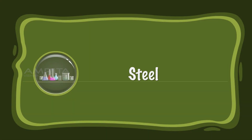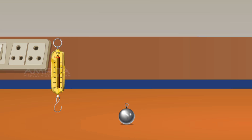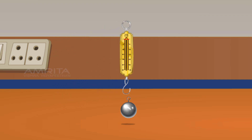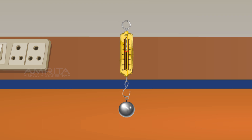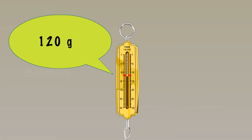Steel. Use a spring balance and a steel ball. Weigh the steel ball using the spring balance by suspending the steel ball from the hook of the spring balance. The mass of the steel ball is 120 grams.